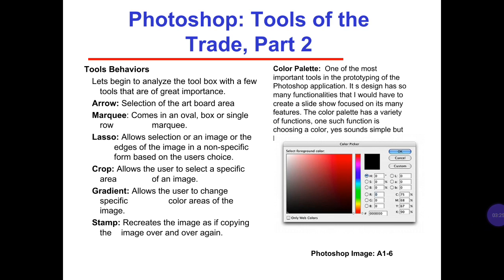Photoshop: Tools of the Trade, Part II. Tool behaviors. Let's begin to analyze the toolbox with a few tools of great importance. The arrow selection of the artboard area comes in an oval box or single-row marquee. The lasso tool allows selection of an image or the edges of the image in a non-specific form based on the user's choice. Crop allows the user to select a specific area of an image.